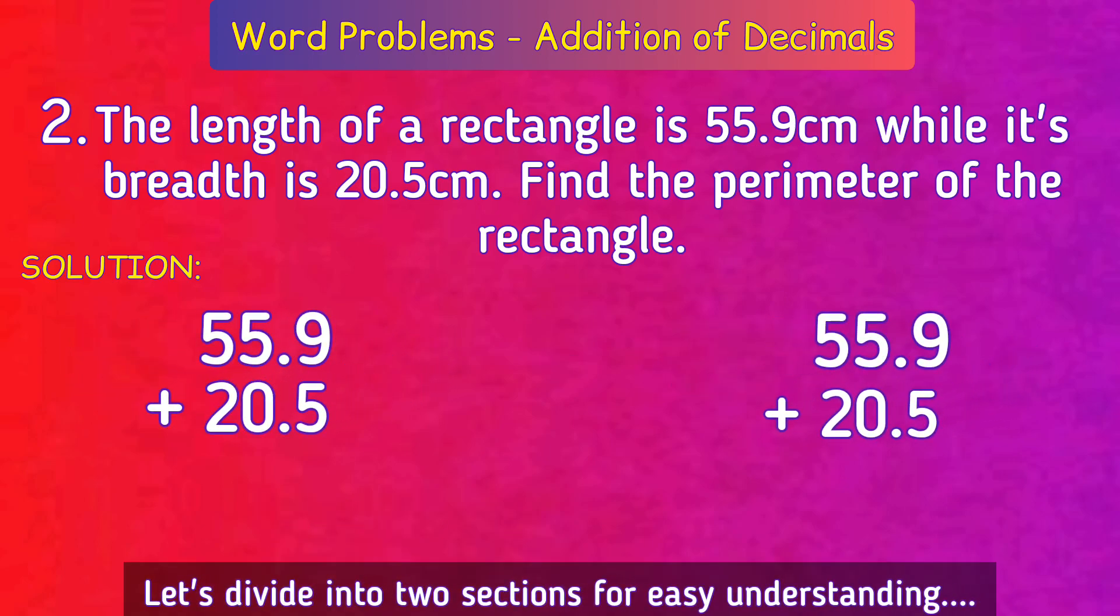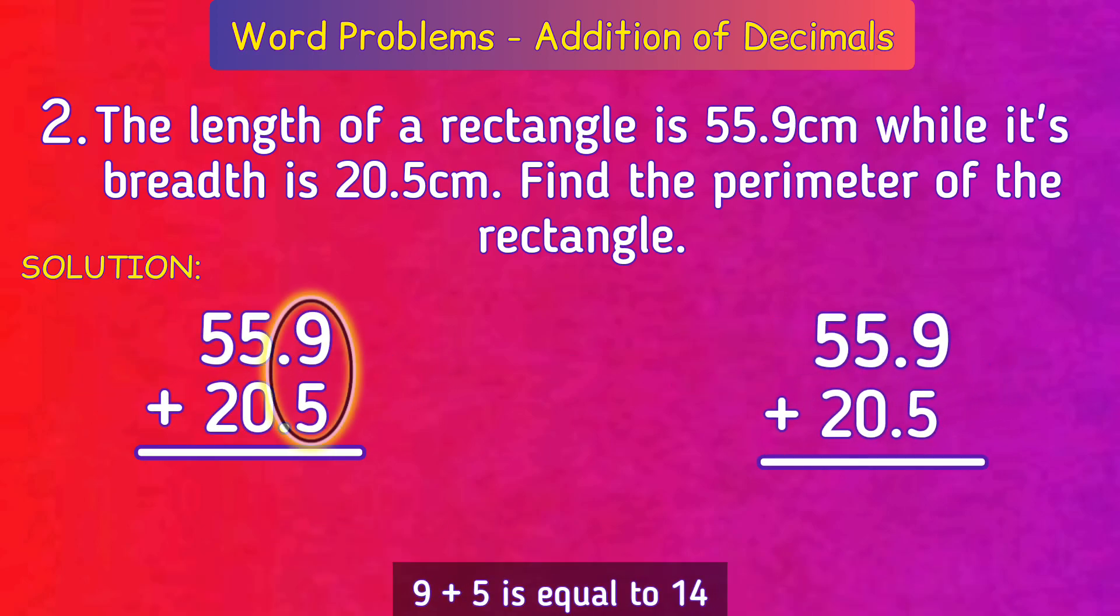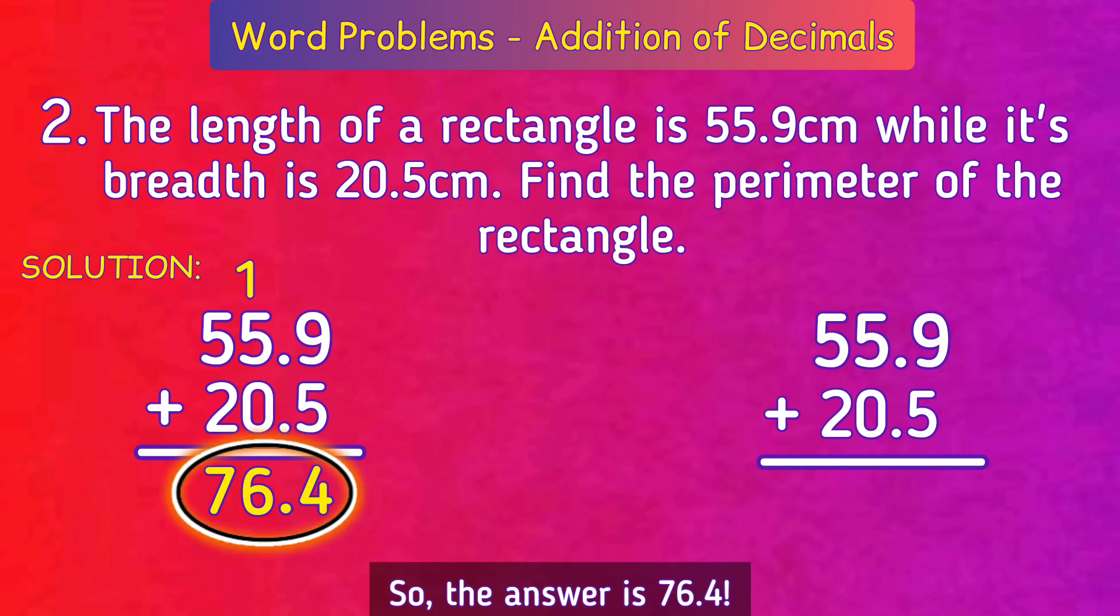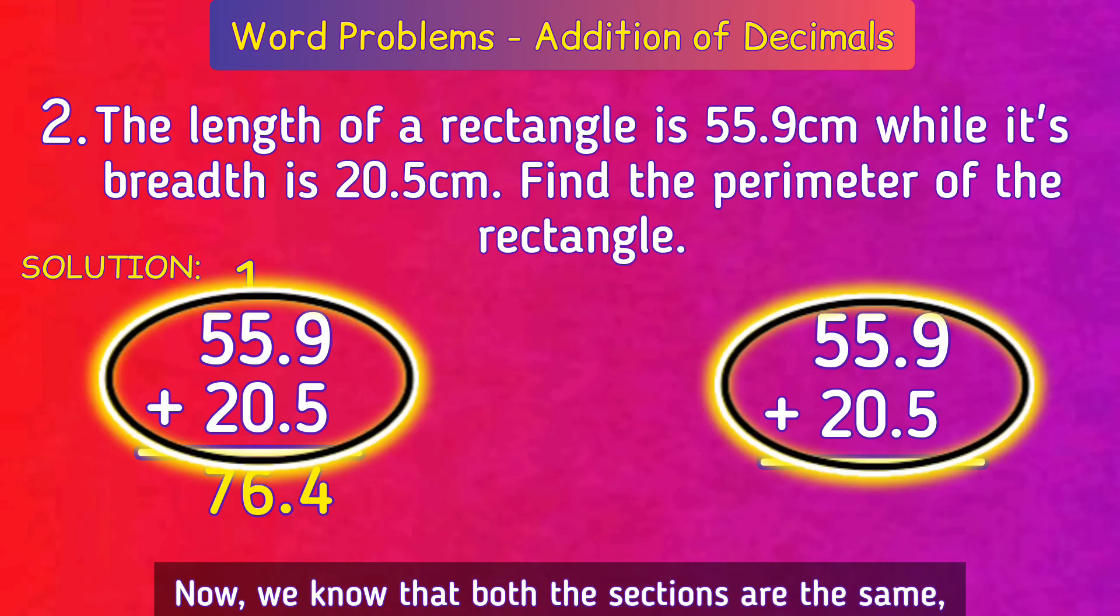Keep the position as shown. 9 plus 5 is equal to 14, put 4 and keep 1 on top of 5. Keep the decimal point. 1 plus 5 plus 0 is equal to 6, keep 6. Now 5 plus 2 gives 7, so the answer is 76.4.